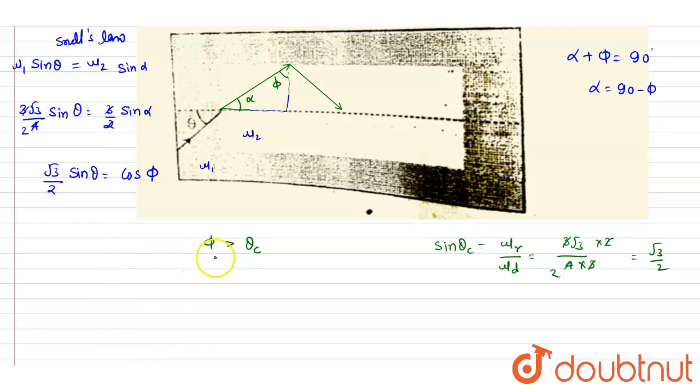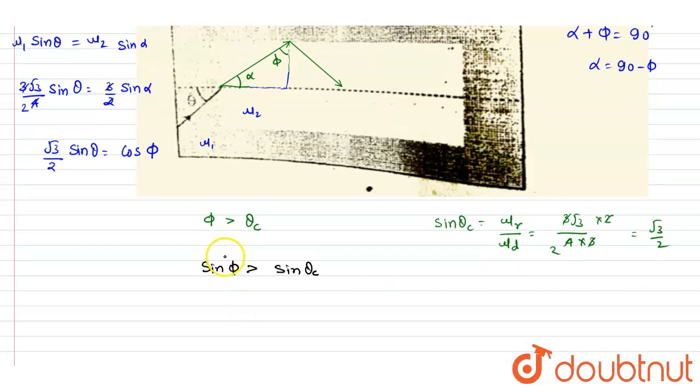So we have a condition that this φ should be more than θ_c, and if I take sin both sides, sin φ should be more than sin θ_c. And same goes for the square: sin² φ is more than this. So just you can put the value. It is 1 - cos² φ. It should be more than or equal to, you can also say, sin² θ_c, it is 3/4.